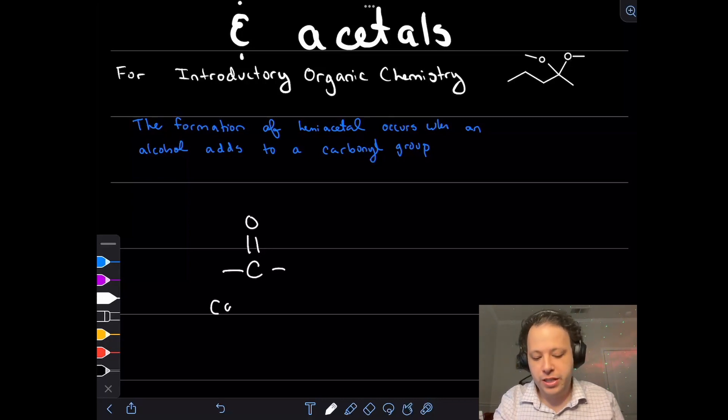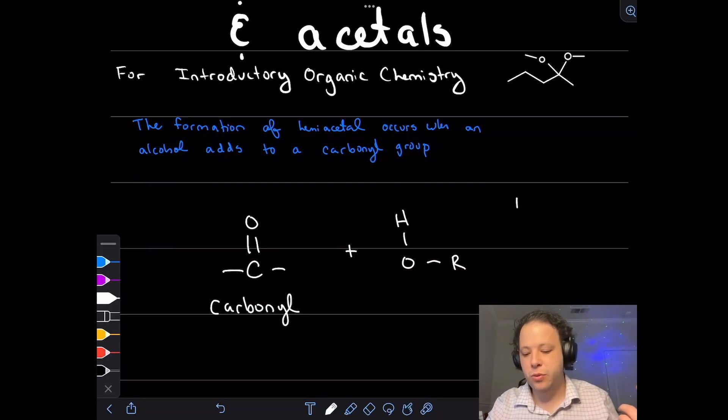So it all starts from just a simple carbonyl. A carbonyl is anytime you have a C double bonded to an oxygen, and this can come in many different forms. Specifically in this reaction, whenever you have an aldehyde and a ketone. This carbonyl is going to be reacting with an alcohol, which is an OH group attached to some sort of R group or alkyl chain.